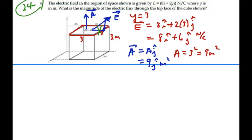All right, we want to find the flux through this surface, and the flux for a flat surface is going to equal the E field dotted with the area. And this is going to be 8i plus 6j dotted with the area, which is 9j.